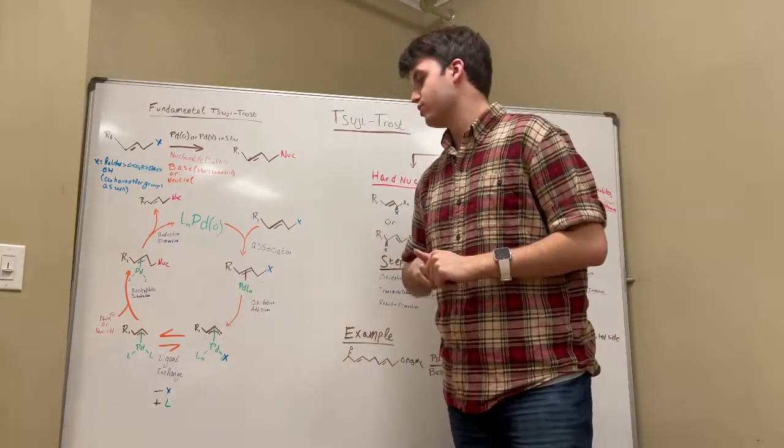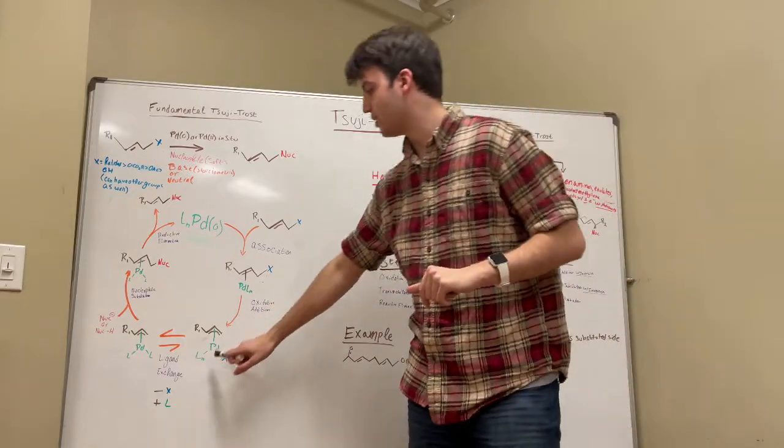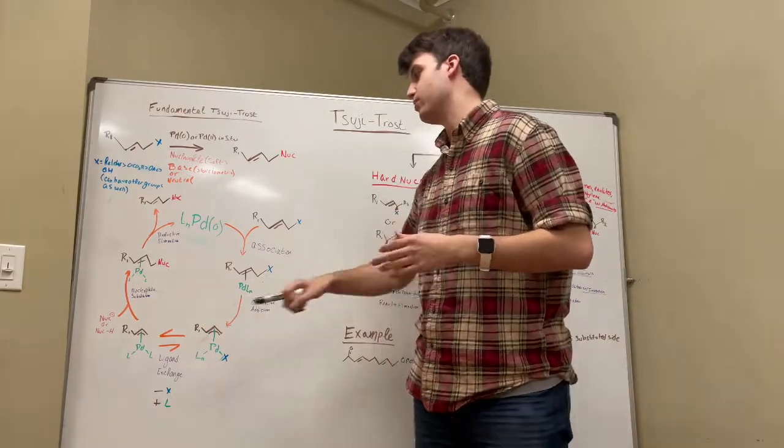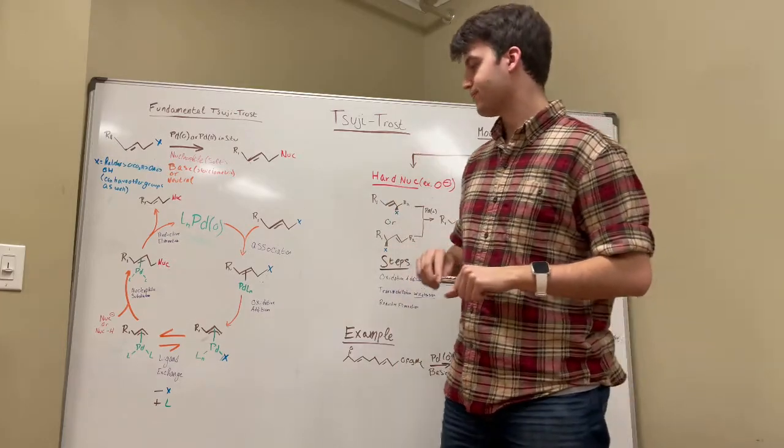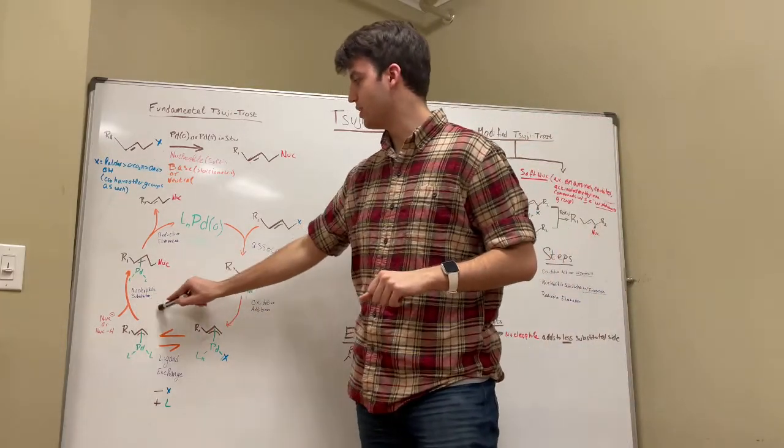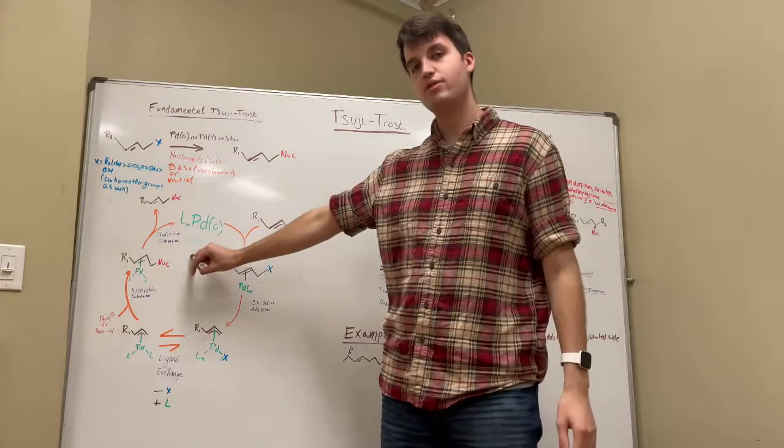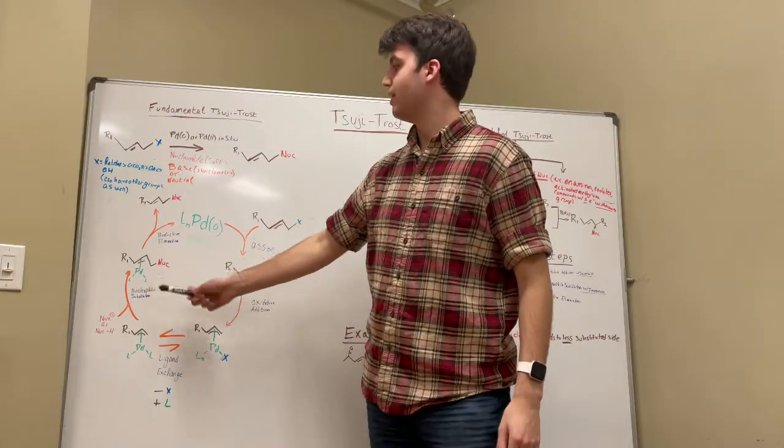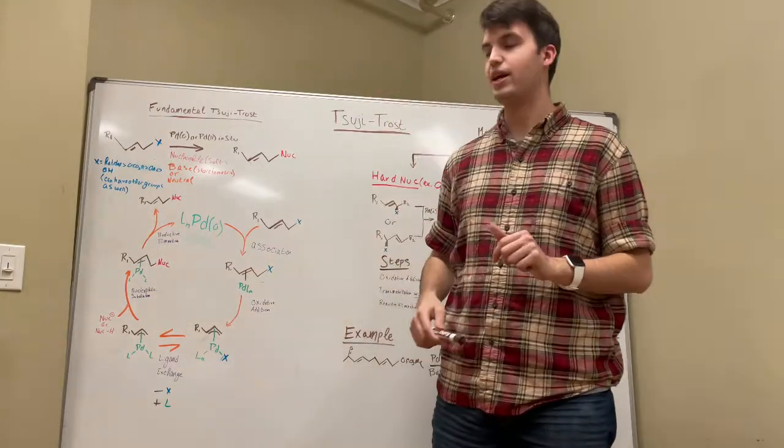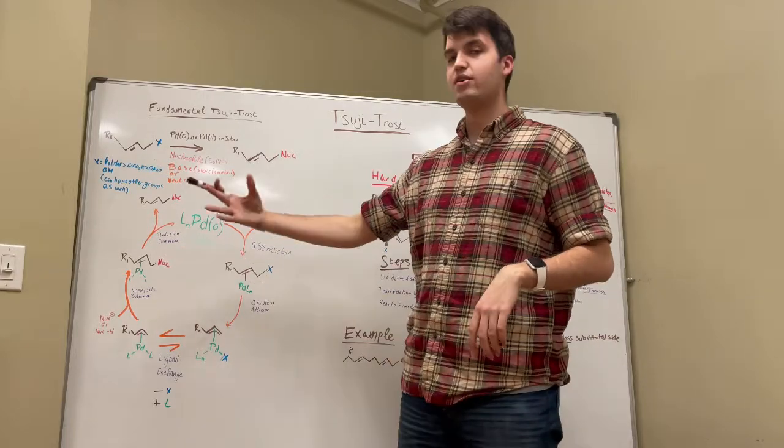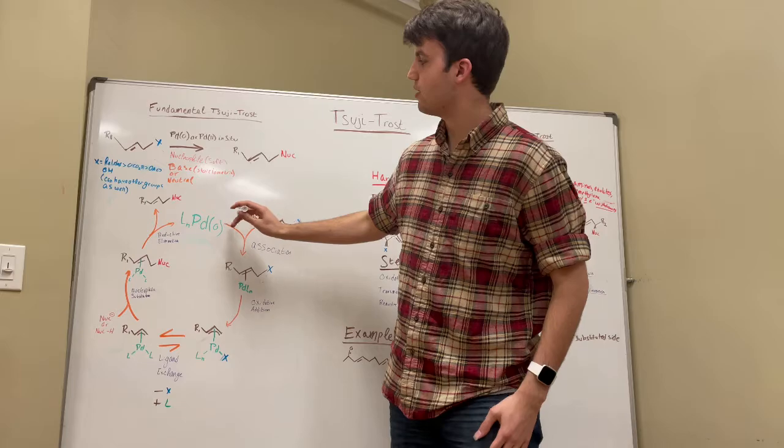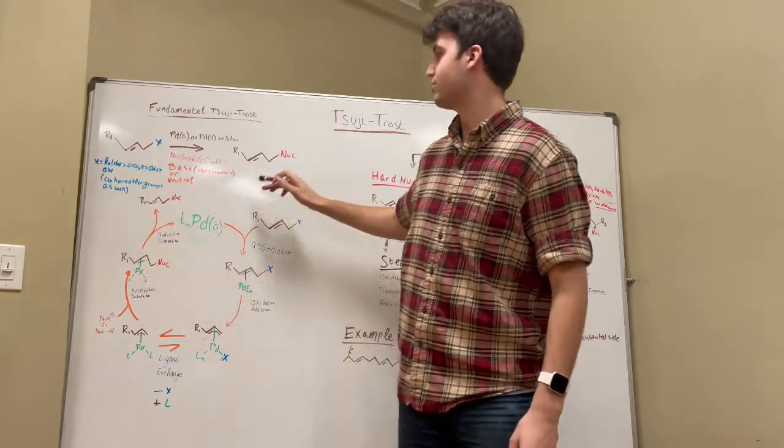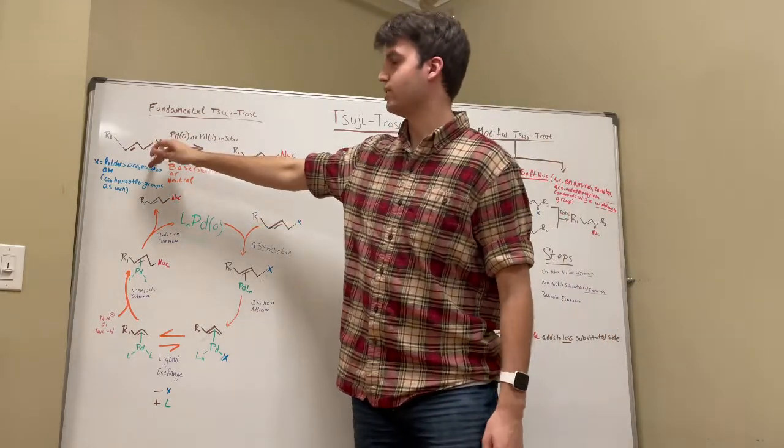Then we do a ligand exchange. So, the leaving group leaves and a ligand replaces it on the palladium with, again, this little conjugate system right here. And then we do a nucleophilic substitution, where the nucleophile adds onto this position, and the palladium becomes associated with the alkene once again. The final step is just a reductive elimination, where we get our palladium 0 once again, and then we get our product, which is the nucleophile, replacing the leaving group.